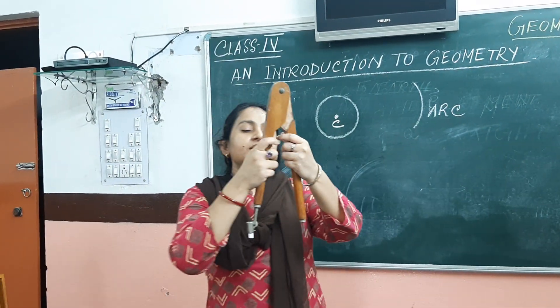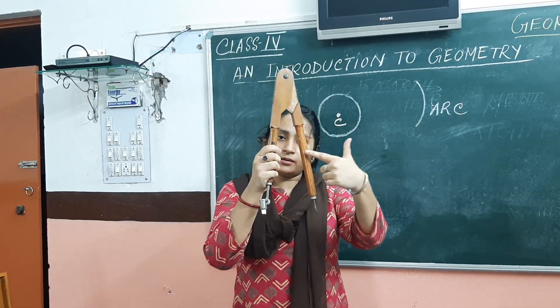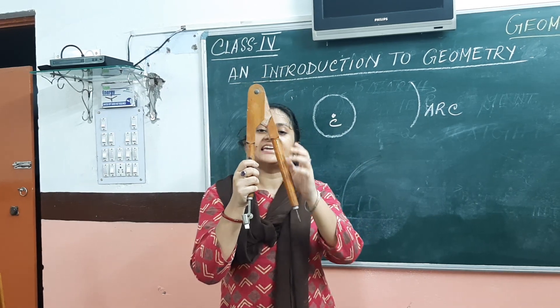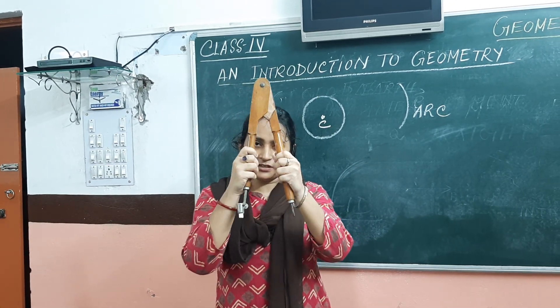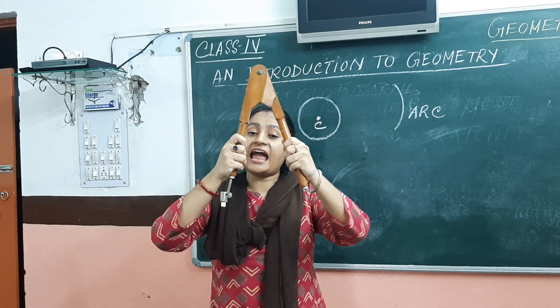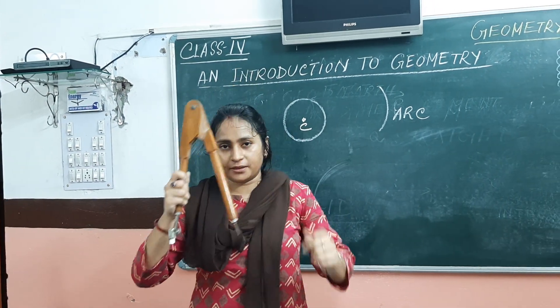Now one thing I want to tell you is that the distance between the two arms of a pair of compasses is adjustable. That means by moving the two arms you can adjust the distance between them.